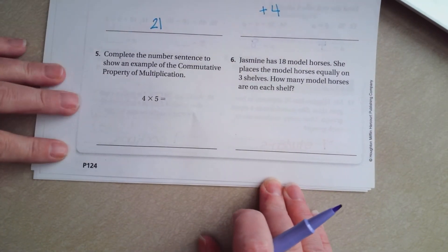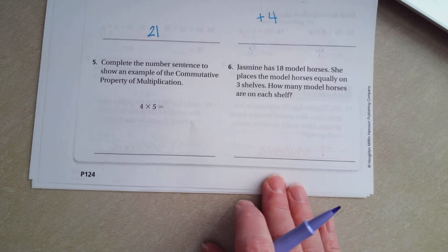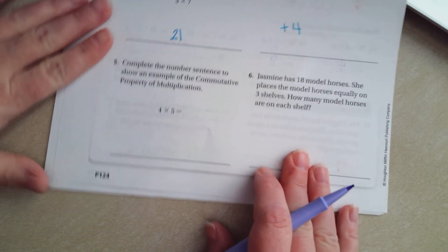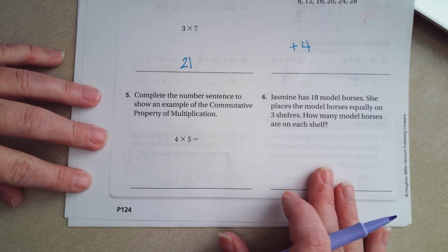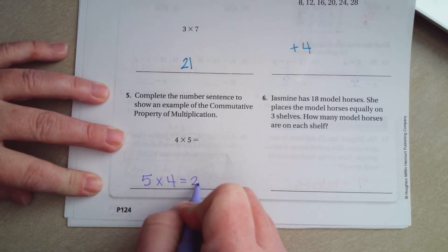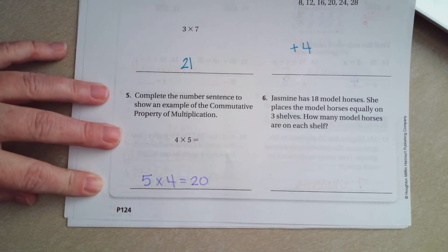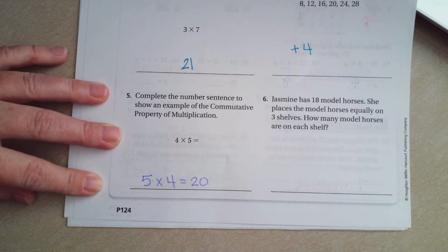Complete the number sentence to show an example of the commutative property of multiplication. So when you commute, you are moving. So you have the same numbers, we're just going to have them in a different order. I still have 4, I still have 5, and I have the answer. It's the commutative property, guys. It just means that they moved places.